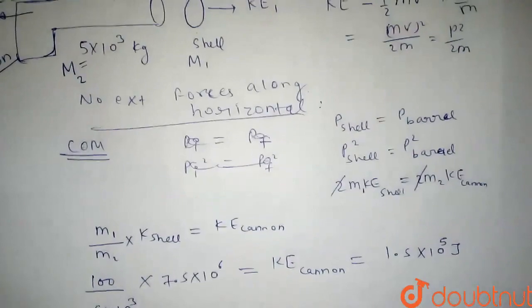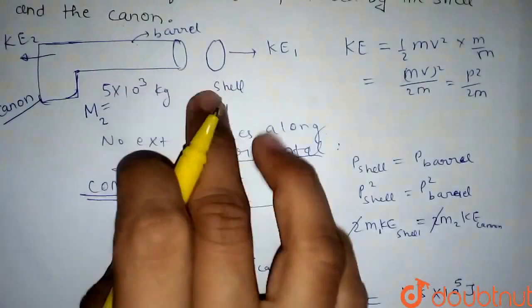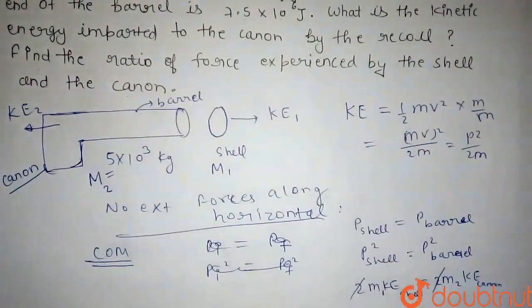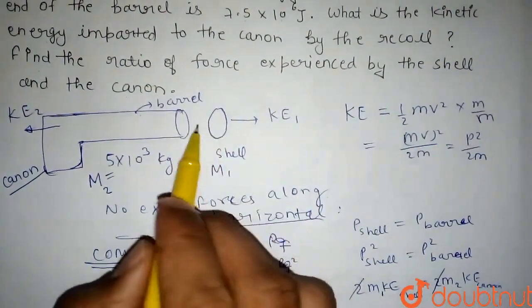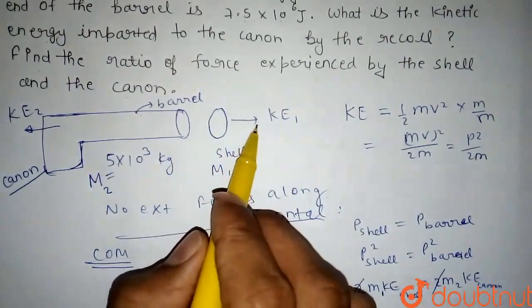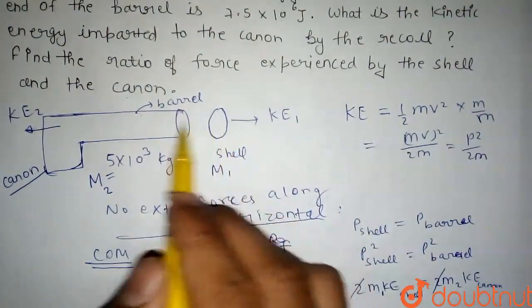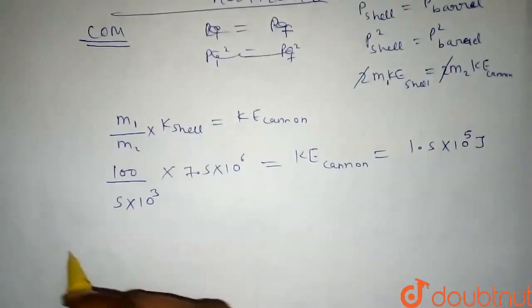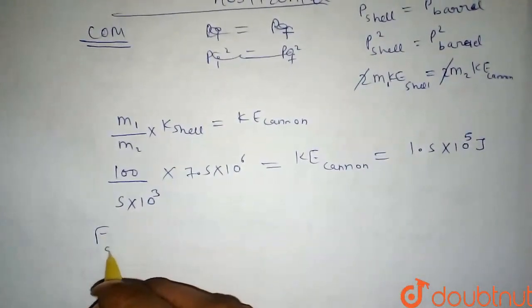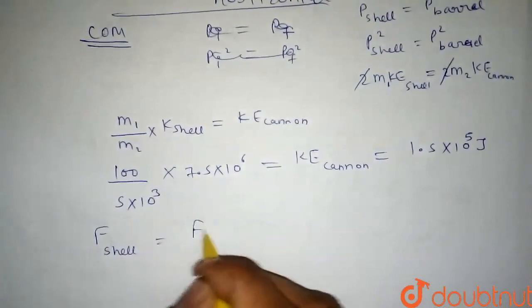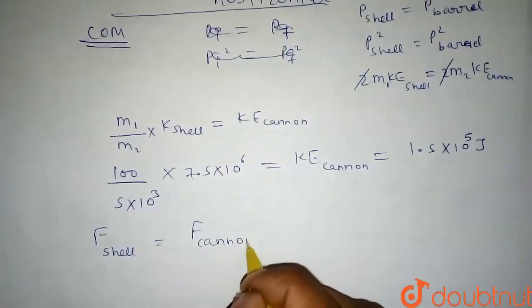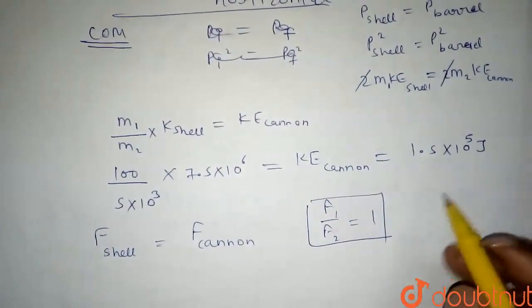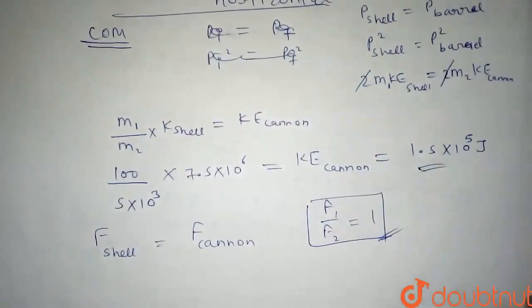Now, no external forces are acting on the system. We need to find the ratio of forces. The force the shell exerted on the cannon is the action, and the force the cannon exerted on the shell is the reaction. By Newton's third law, the force exerted by the shell equals the force exerted by the cannon, so the ratio of the two forces is one. These two are our final answers. Thank you.